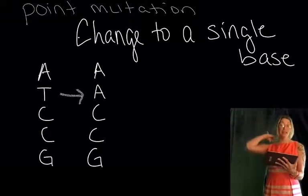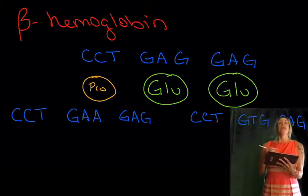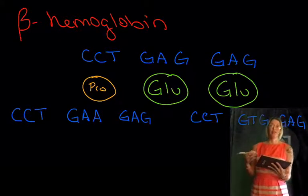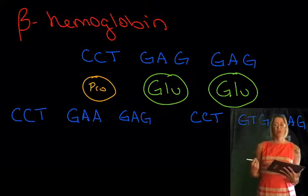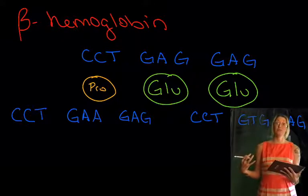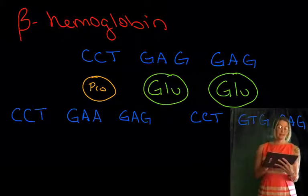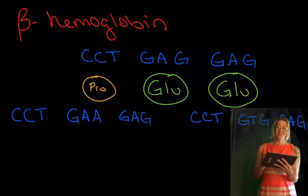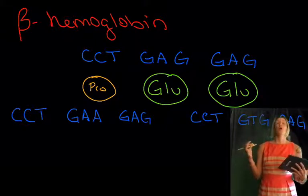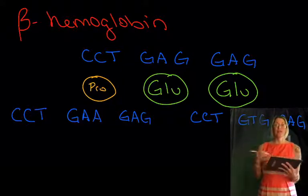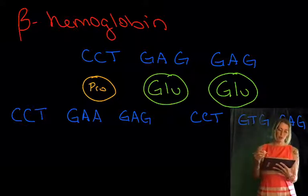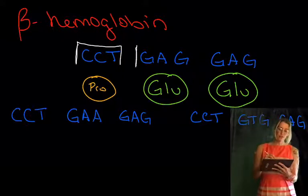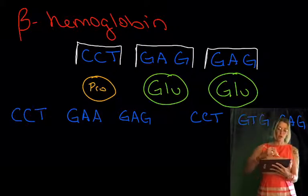We're going to talk about how even something as simple as a point mutation can make a really big change. In our beta hemoglobin gene, we've touched on hemoglobin before. This is a big gene family. Beta hemoglobin is critical to our body's ability to carry oxygen. This CCT GAG GAG is just an excerpt from one section of this beta hemoglobin gene.